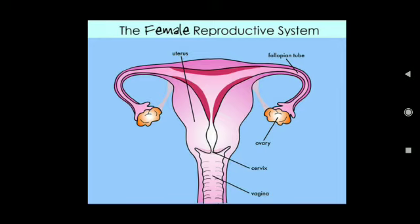The fertilized egg starts dividing and forms a ball of cells, or embryo. The embryo is implanted in the lining of the uterus where it continues to grow and develop organs to become a fetus.